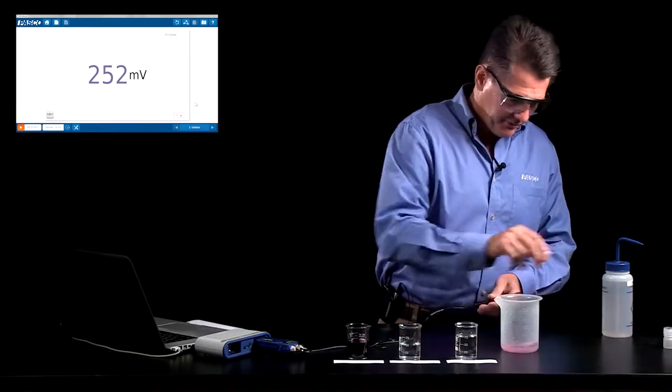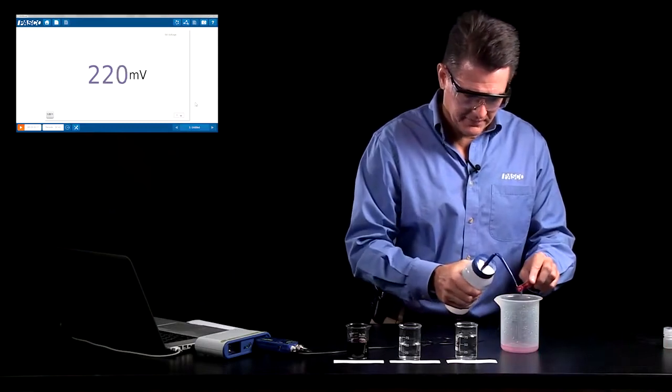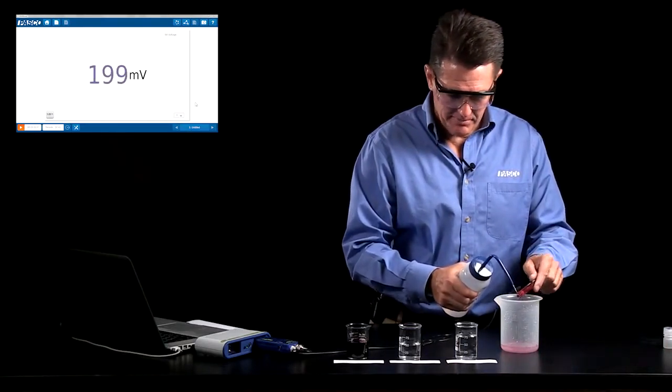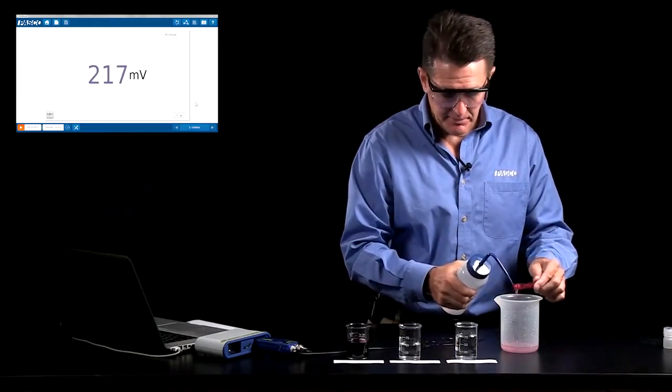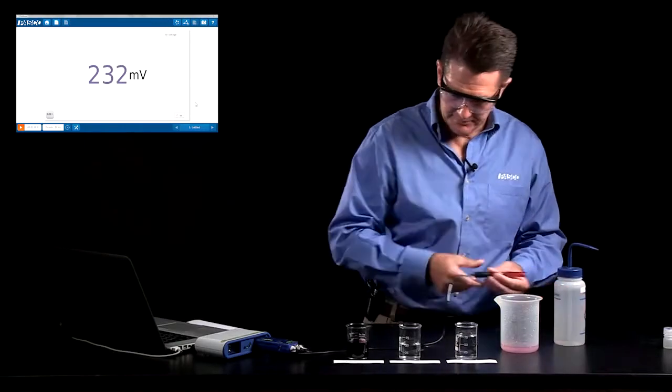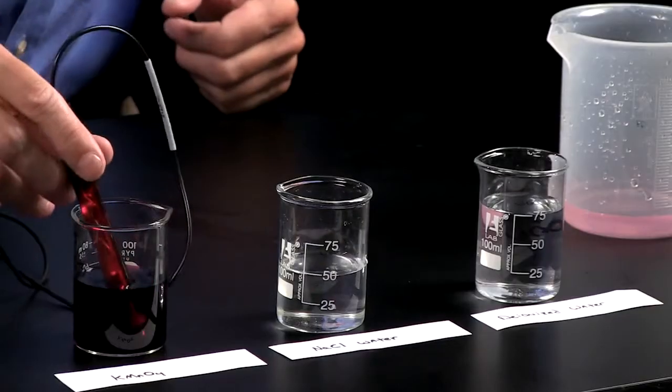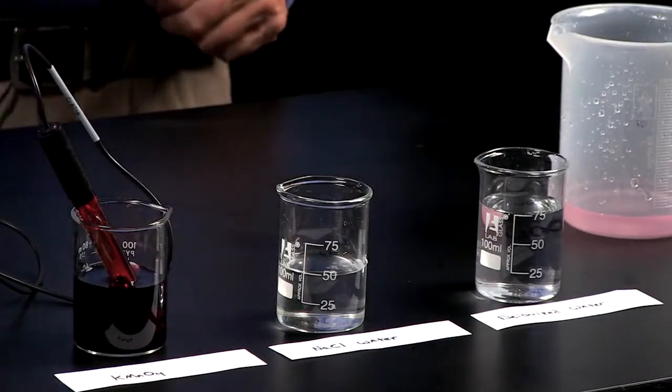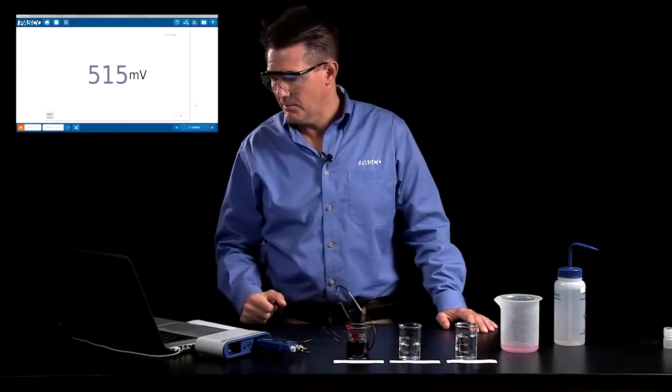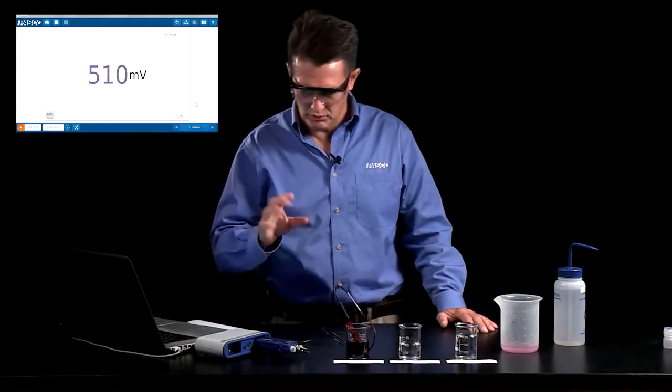I'm going to rinse this off before I place it in my next solution, which is potassium permanganate. Potassium permanganate is a known aggressive oxidizer, so I would expect to get significantly higher readings by placing it in there. And yes, I can see that I'm about 513 or so.